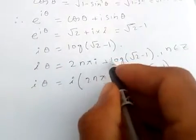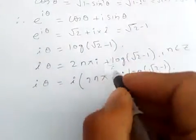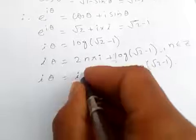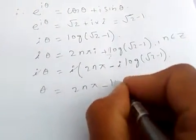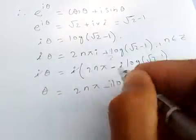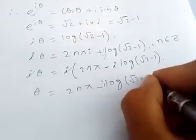How come minus i? So if I take i common here, it will be one upon i. So one upon i, if I simplify minus i, just to get cancelled.